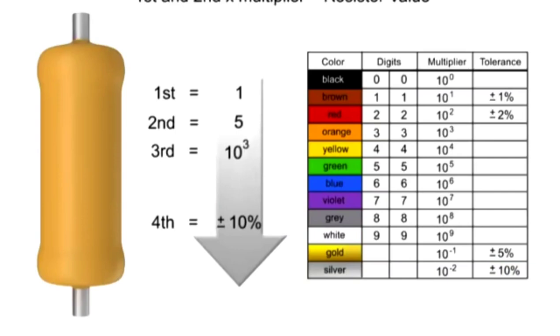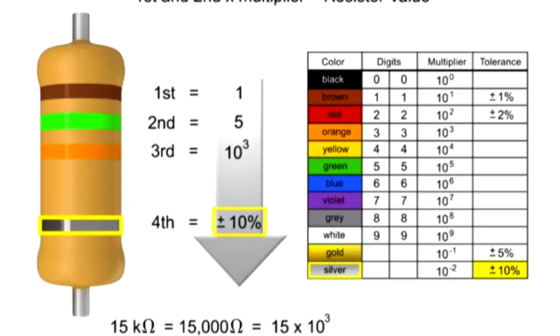Now, let's determine what the bands would be on a 15 kilo-ohm resistor. Since the first digit is 1, the first band would need to be brown. The second digit is 5, so the band color would need to be green. The resistor value is 15,000 ohms, so we need to add three zeros to 15. Three zeros is a thousand, so we need to have a multiplier of 10 to the third. Thus, the third band would need to be orange. The last band would need to be silver to indicate that the resistor has a tolerance of plus or minus 10%.